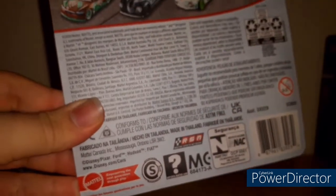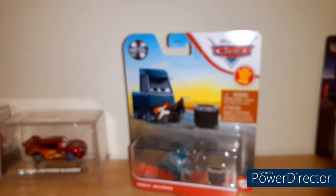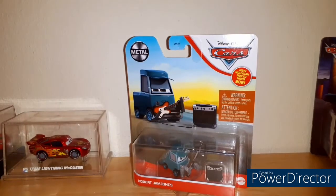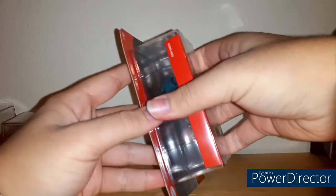He is a 1:55 scale diecast made by Mattel, custom painted with no paper stickers, and he's made in Thailand. So now let's go ahead and open up Robert Jim Jones.